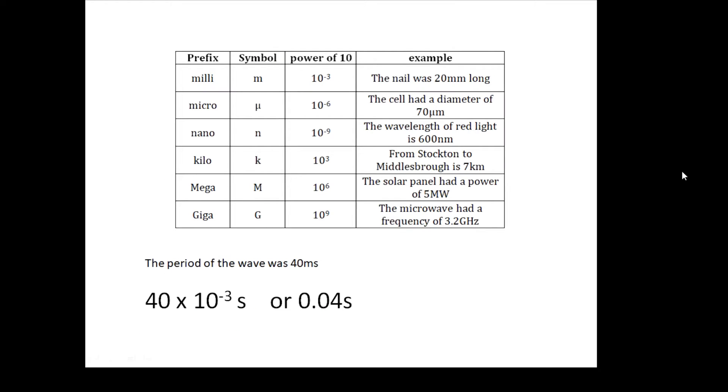Prefixes. Now, you must learn these and be able to use them. If you see a question, for example, it says the period of the wave was 40 ms. Now, that little m is not a typo. It's very, very important. What it actually says is that the period of the wave was 40 milliseconds. Little m is milli. That prefix is milli. And it means a thousandth. It means times 10 to the minus 3. It means that the period was 40 divided by 1,000, 0.04. You must learn these prefixes.